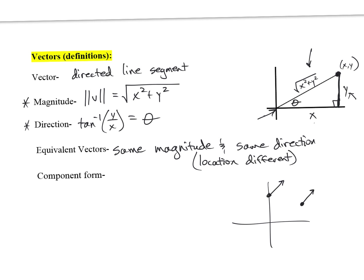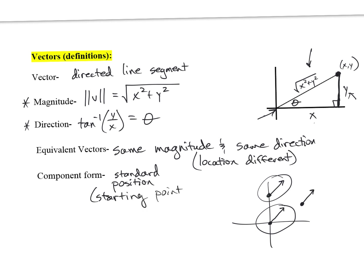The ones we really like are equivalent vectors where we take one that doesn't have a starting point at (0,0) and move it so its starting point is at (0,0). Then it becomes component form. If you can get it to start at (0,0), it's called standard position. In component form, you give the x,y coordinate using little chevron brackets instead of parentheses.